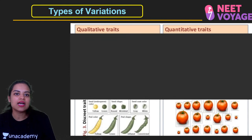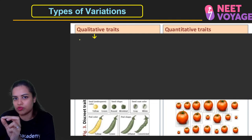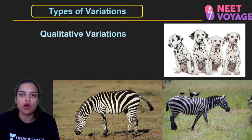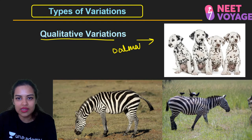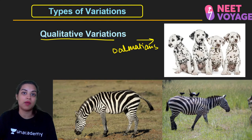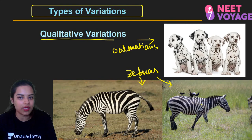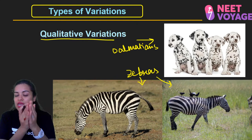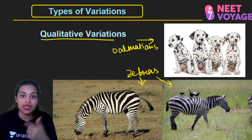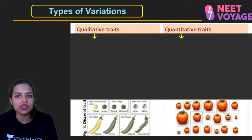Qualitative variations can be seen in Dalmatians, where each individual has a different spot pattern, or in zebra stripes, where two individuals of the same species have very different stripe patterns. Quantitative variation examples include height or size differences — some individuals are taller, some shorter than average, showing small fluctuations from the mean.